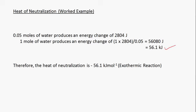Therefore, for 1 mole of water we calculate 1 multiplied by 2,804 divided by 0.05, giving 56,080 joules. We convert to kilojoules by dividing by 1,000, giving 56.1 kJ. Since this reaction is exothermic, we apply a negative sign, so the heat of neutralization is minus 56.1 kilojoules per mole.